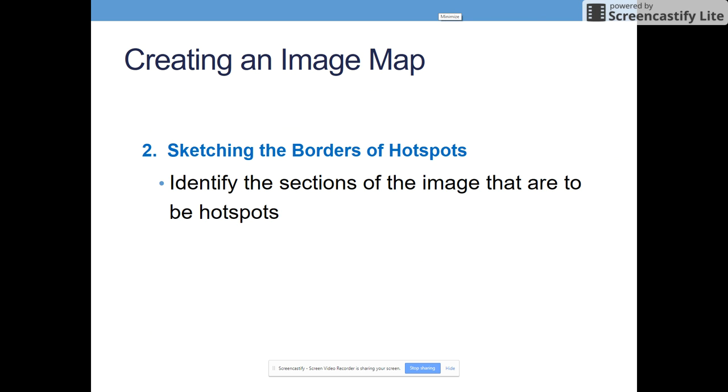Then the second step is to sketch the borders of those hotspots. You have to identify the sections of the image that you actually want to be hotspots. And those can be a variety of shapes, but you need to state, okay, this section is important. This section is important. And maybe every part of your image will have a hotspot on it, or maybe just a couple of key portions of your image will have a hotspot.